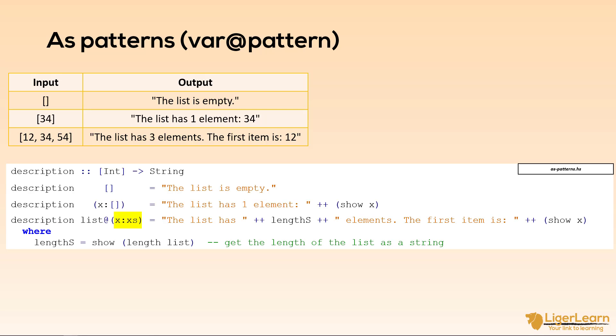But remember we also need to get the count of the number of items in the list and so we need a way to bind a variable name to the whole list not just to its constituent parts.